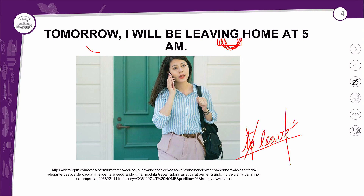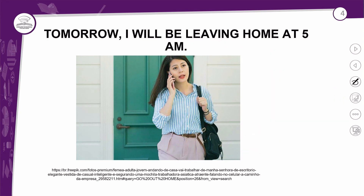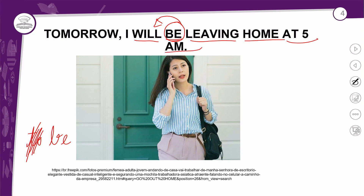Tradução disso: amanhã, 'I will be leaving' — eu estarei partindo. Onde está esse 'estarei'? Está aqui: o verbo 'to be', que seria 'estar'. No futuro, a gente usa ele na sua forma base sem o 'to' — a forma base dele é 'be'. Então 'I will be leaving' — eu estarei partindo de casa às 5 da manhã.